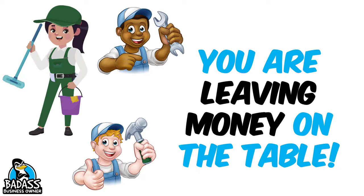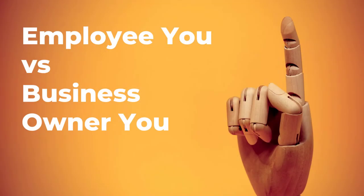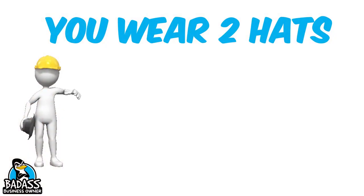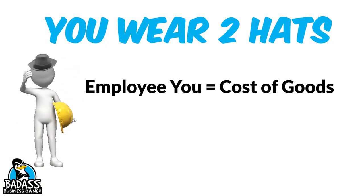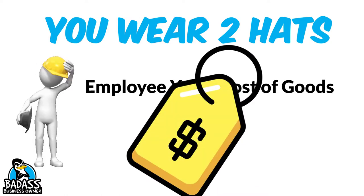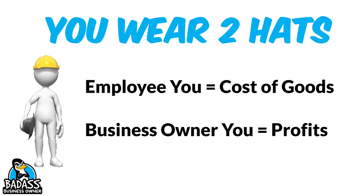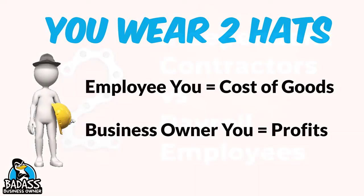Even in a one-person business. The first thing you need to remember: there is the employee you and the business owner you. You get paid both as the business owner and as the employee in your business. The employee you is typically paid out of the cost of goods, depending upon the type of business you have. If you are working in the business as an employee, then the employee you must be figured into your pricing as labor hours. The business owner you is paid out only if the business is profitable, and this is called an owner's draw — it is not part of your labor hours.